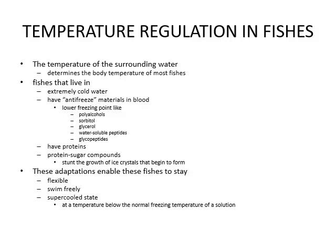Temperature regulation of fishes: fishes live in an aquatic environment where temperature remains near constant. They have to live in almost the same environment, either in cold water or warm water. The temperature of the surrounding water determines the body temperature of most fishes. Fishes that live in extremely cold water have antifreeze materials in the blood. Enzymes need specific temperatures for their activity, so to protect the enzymes, fishes maintain antifreeze agents in their blood. These may be poly alcohols, sorbitol, glycerol, water-soluble peptides, or glycoproteins that lower the freezing point of the blood.